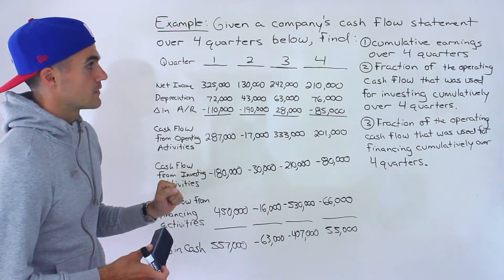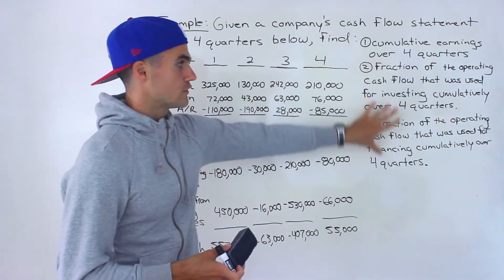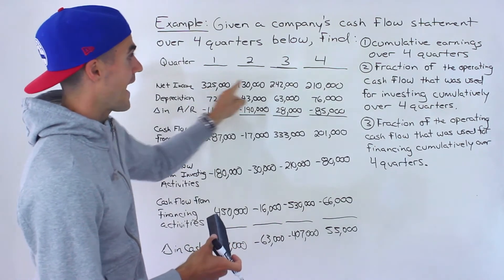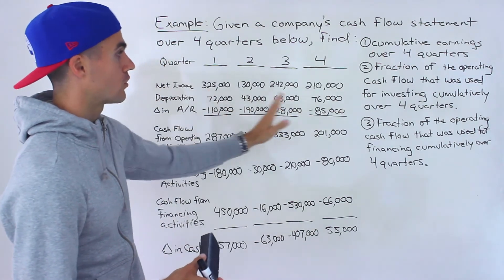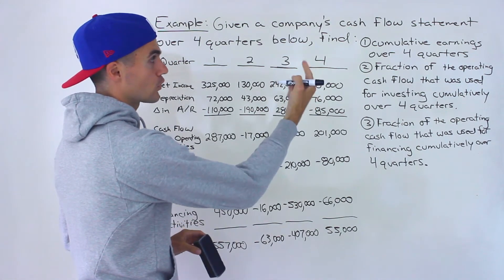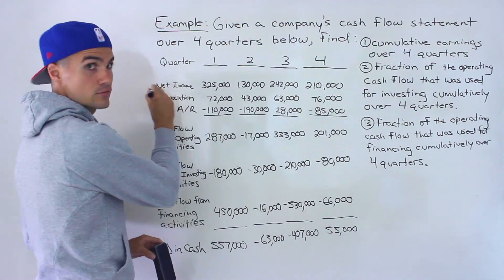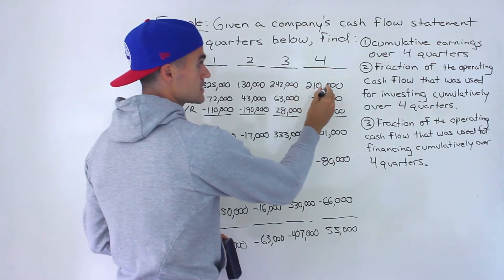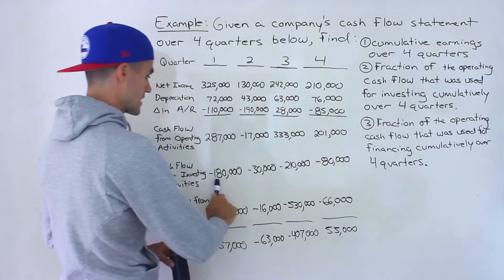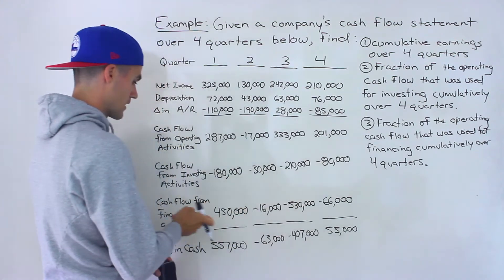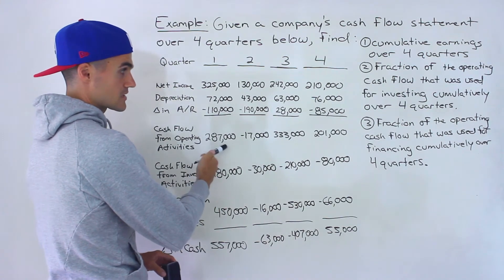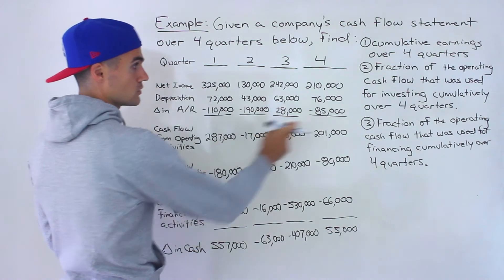Notice what they're asking is the cumulative amounts in all three questions. So what we're actually going to have to do is add the amounts for the entire year over the four quarters. Notice number one, they're asking for the cumulative earnings over the four quarters — that's the cumulative net income. Then we're asked for the fraction of the operating cash flow that was used for investing, so we'll add all the operating and investing cash flows. That cumulative operating cash flow amount we'll use for both two and three.